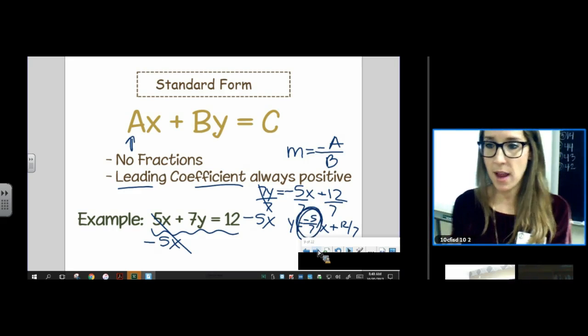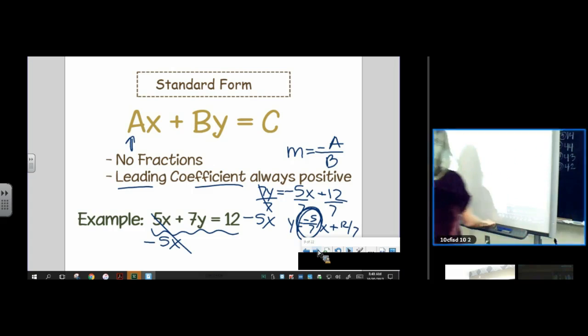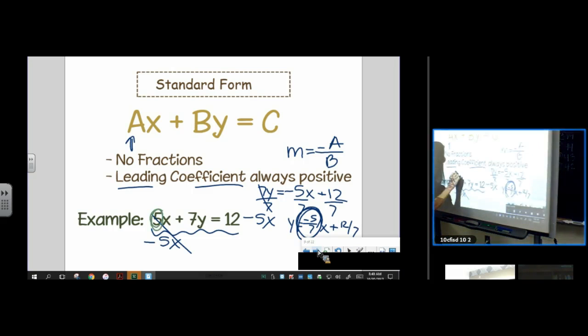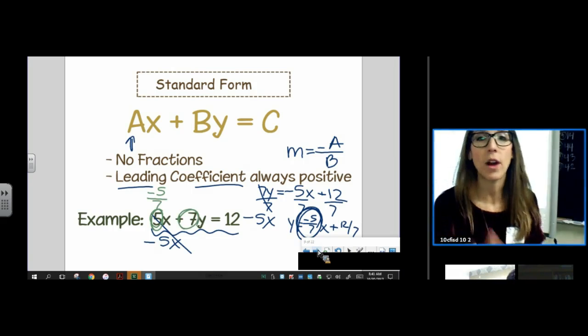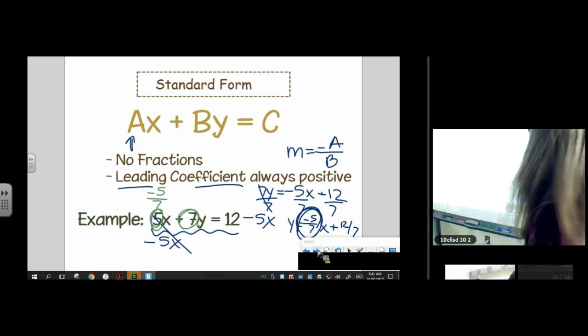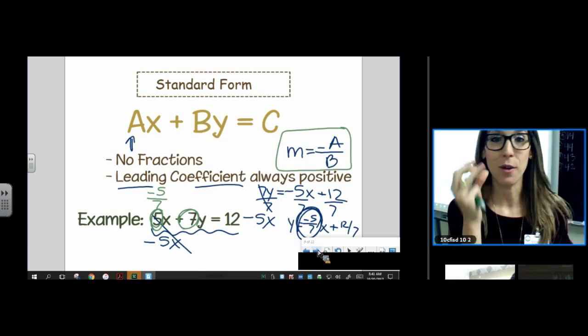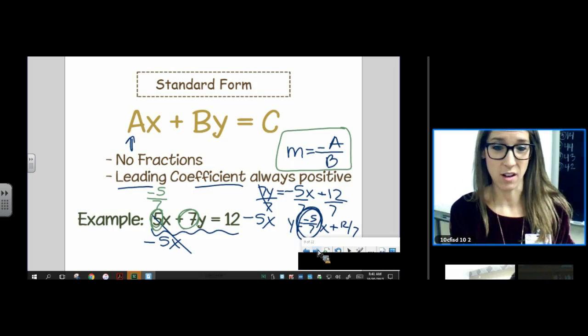This is the slope. Well, I could have just looked at my original problem and I could have just taken negative a over b. And so if you memorize, that's not on your formula chart. But if you choose to memorize this, you're going to get the slope so fast and those problems aren't going to take you very long.